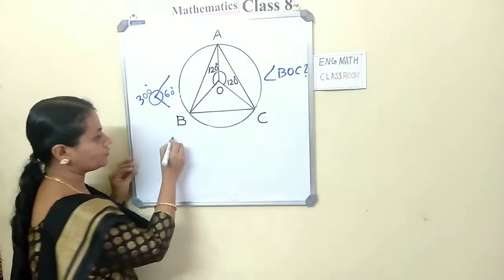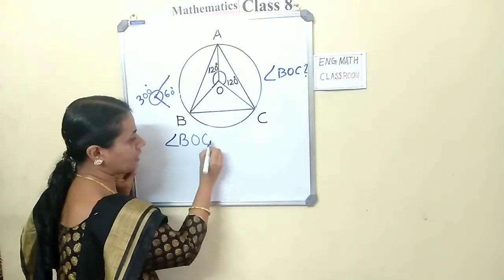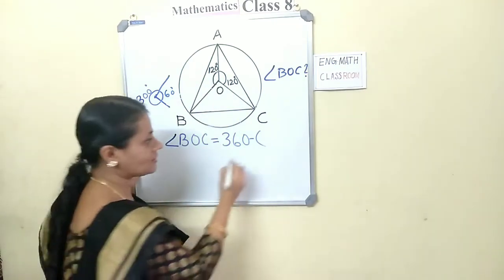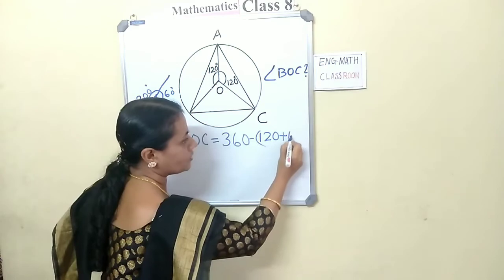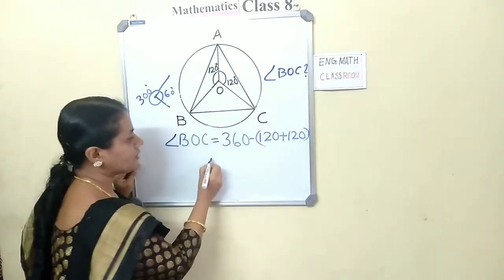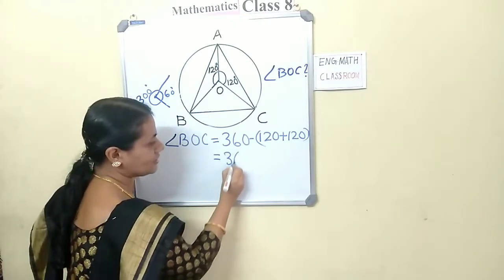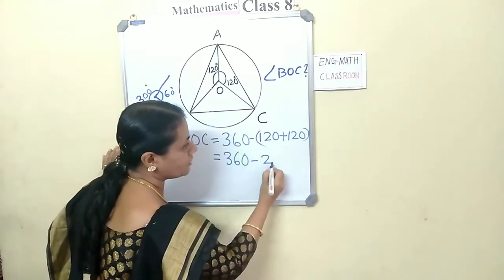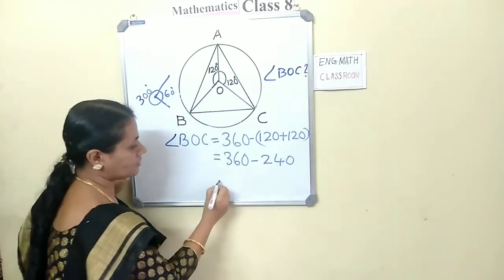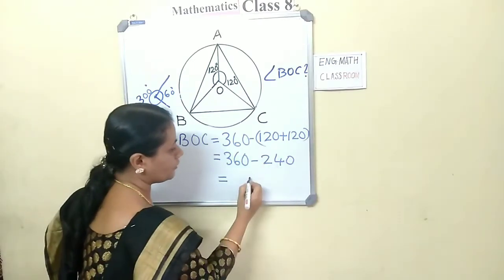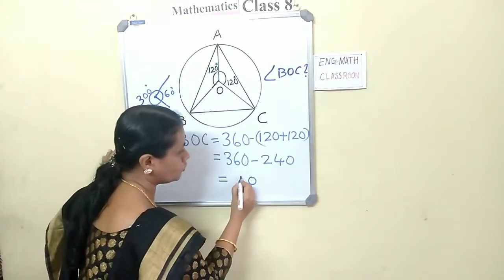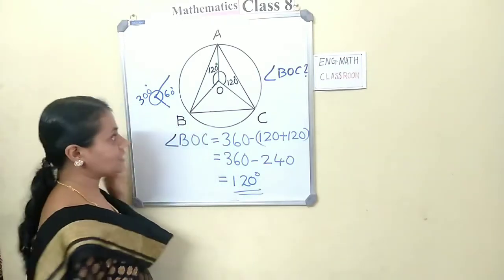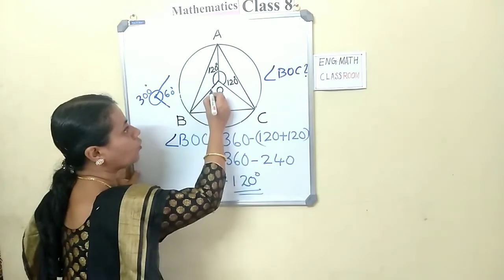120 plus 120 equals 240. So 360 minus 240 equals 120 degrees. Therefore, angle BOC is 120 degrees.